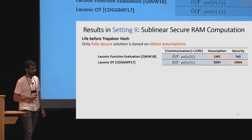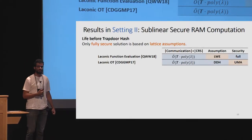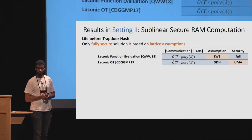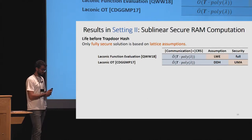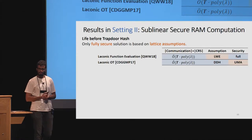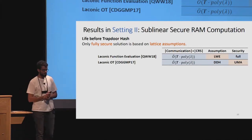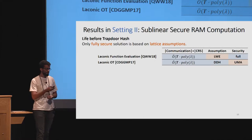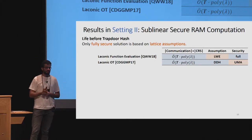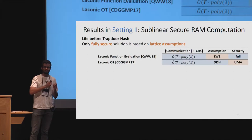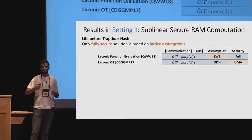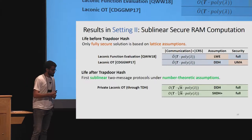Before trapdoor hash, the only sublinear communication solution was laconic function evaluation, giving communication proportional only to the running time t of M — optimal up to poly(lambda) factors — with security under LWE. Alternatively, laconic oblivious transfer gave roughly the same communication complexity with security based on DDH, but it did not guarantee the full notion of security: in particular, the access pattern of the machine M is revealed to the receiver Bob.